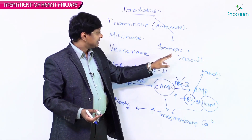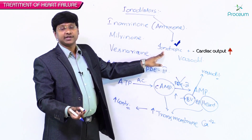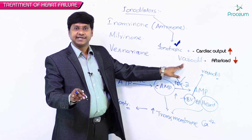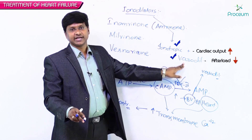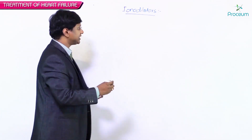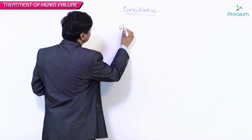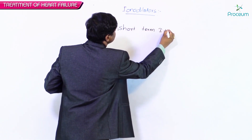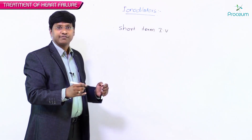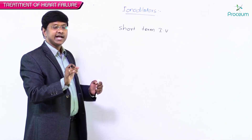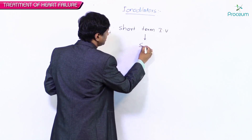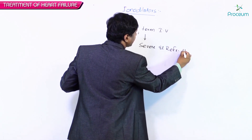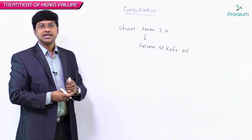Cardiac output increases because of the increase in inotropicity, and the afterload on the heart decreases because of the vasodilatation. These drugs are used for short-term intravenous injections in patients with severe and refractory heart failure.